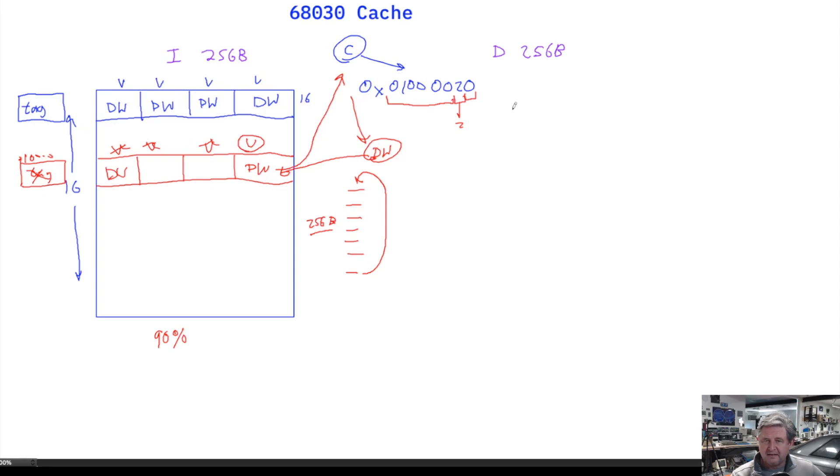We also have the same cache on the data side, and it's the same architecture: 16 cache lines, 16 bytes broken up into four D-words. It operates on the same concepts. With a data cache, of course, you have reads and writes. On the read side, it acts just like the instruction cache.